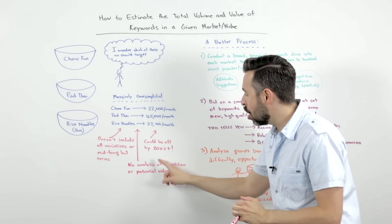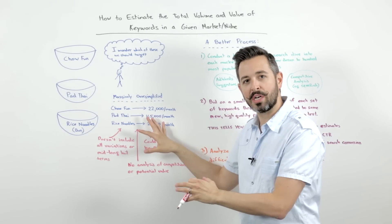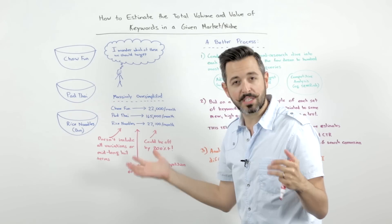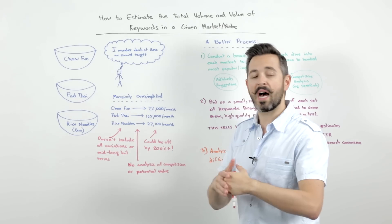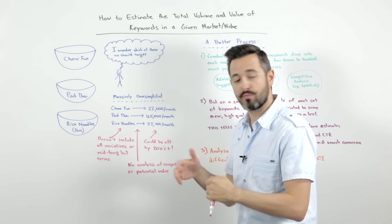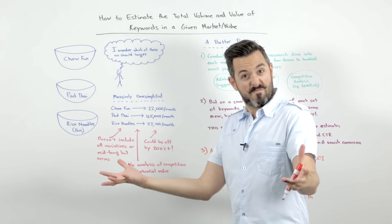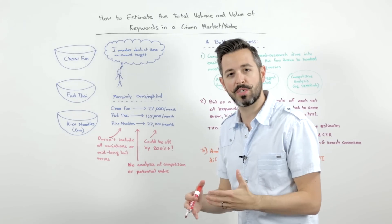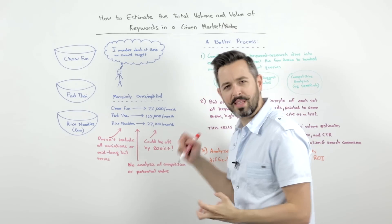There's also no analysis of the competition going on here. So I don't know whether pad thai, yeah, it's popular, but it also has 50 recipe sites all bidding for it, tons of online grocers bidding for it, tons of recipe books that are bidding on that. And then it could be that chow fun has almost no competition whatsoever. So you're really not considering that when you look in here.